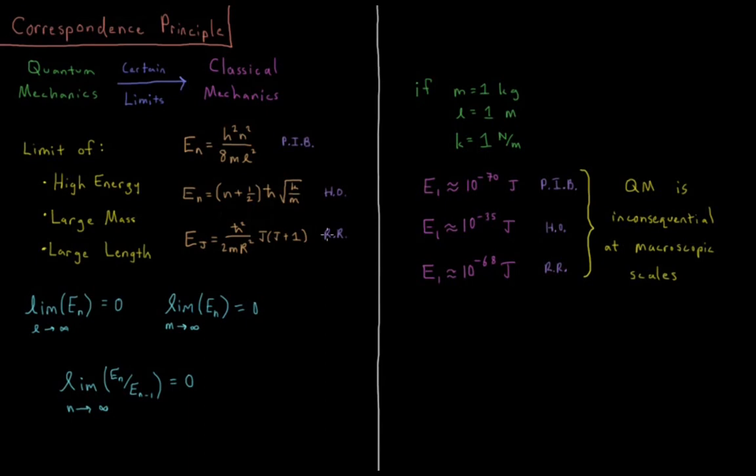And the rigid rotor is going to be a model for how things rotate, how molecules rotate around themselves. It's going to have energy levels that depend on a quantum number J, where E of J equals H bar squared over 2 times the mass, times the bond length of the molecule squared, times J times J plus 1.